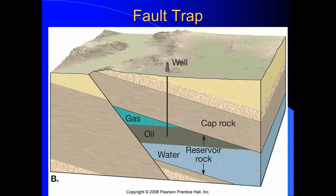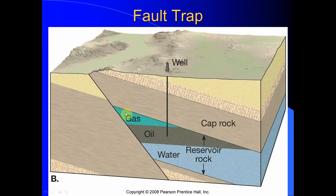Our second trap is a fault trap. Remember, a fault is when we break the rocks through brittle deformation and one side moves relative to the other. Here, one side moves up and the other moves down, and the cap rocks create a nice natural pocket for the oil and natural gas to become trapped in. We discover it, drill a well, and extract it.